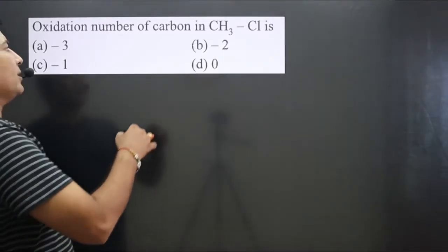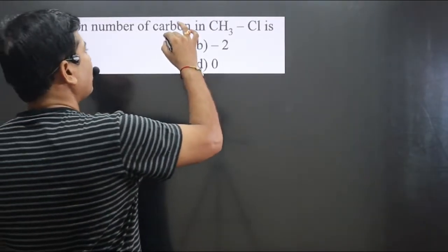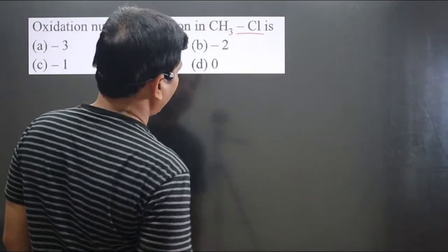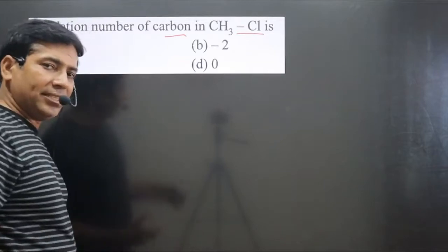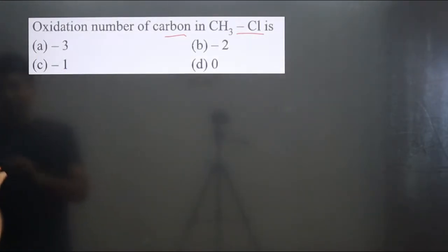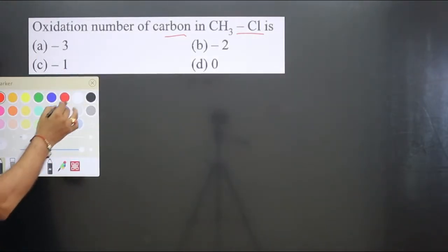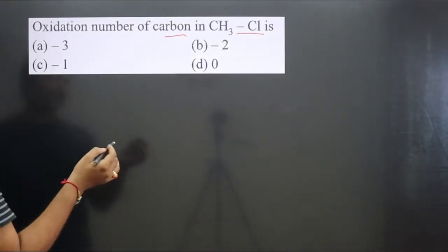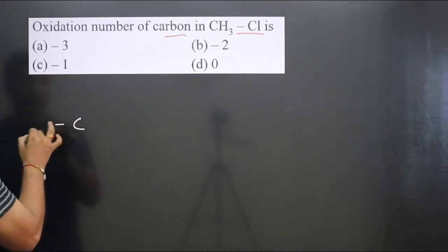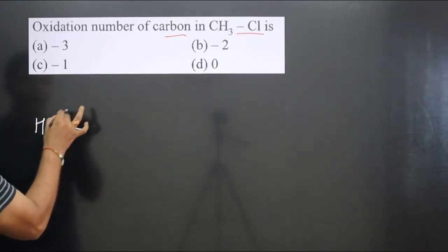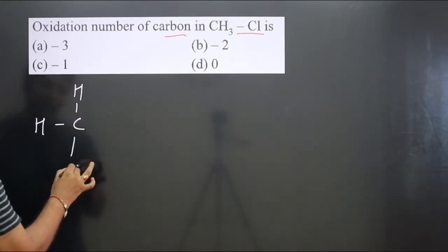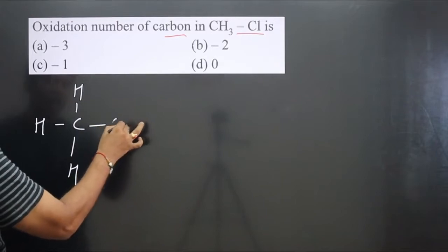The question asks for the oxidation number of carbon in methyl chloride. This is an organic compound. We can draw the structure and calculate the oxidation number of carbon. One carbon is there, three hydrogens are attached.